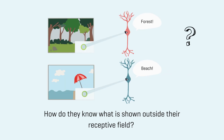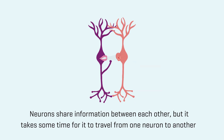How do they know what is shown outside their receptive field? Neurons share information between each other, but it takes some time for it to travel from one neuron to another.